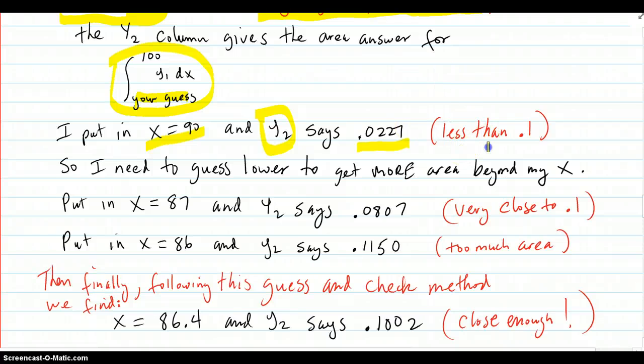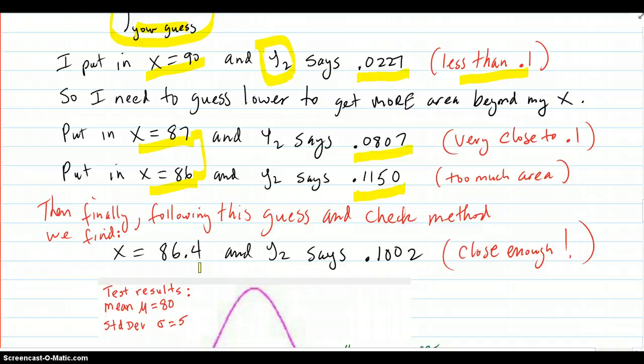said that the area for 90, up to 100, was .0271. But, we want the x value that produces 10%, or .1. So, this is too small. We need more area out there in the tail. That means we got to back up on our x value to produce more area to the right. So, then I put in 87. Second table, 87. And, the y2 said it was .0807. That's close. And, I put in 86 into the table, second table. And, the y2 column said it was .1150. That's too much area. So, it's in between these two. So, then I kept on checking in between there with one decimal place. You don't have to get more accurate than that. And, when it arrived at 86.4, y2 said it was .1002 area out there. Close enough for us.